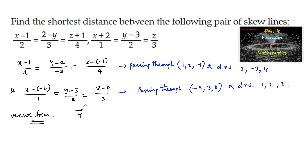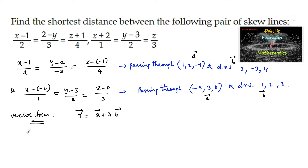We have r̄ = ā + λb̄ as the vector equation of a line passing through a point and having given direction ratios. Here vector a and vector b are identified. The first line's vector equation is r̄ = (i + 2j − k) + λ(2i − 3j + 4k), where the position vector of point (1, 2, −1) is i + 2j − k.